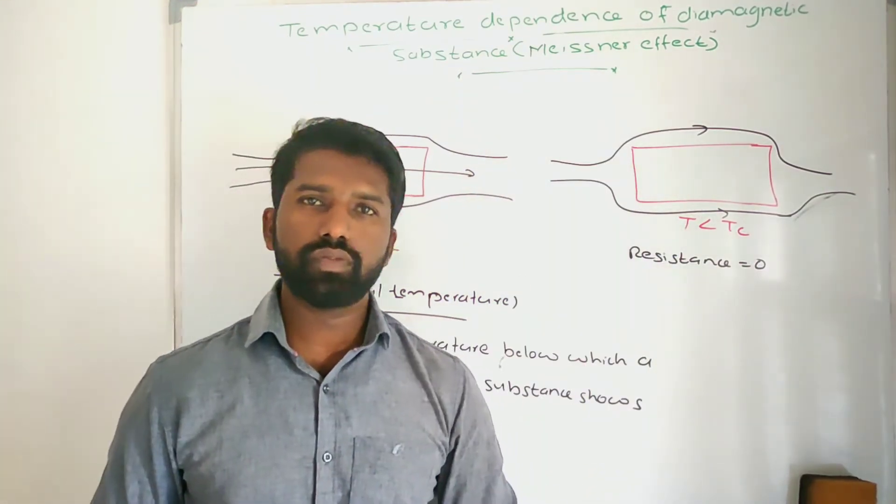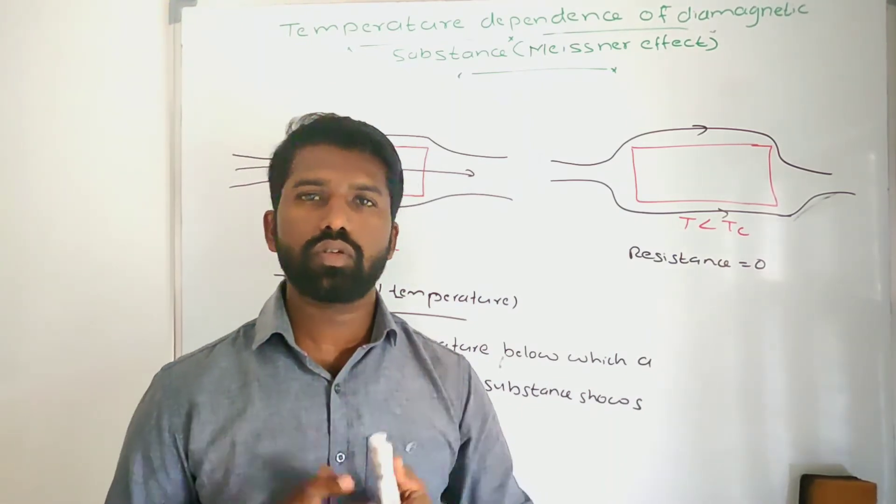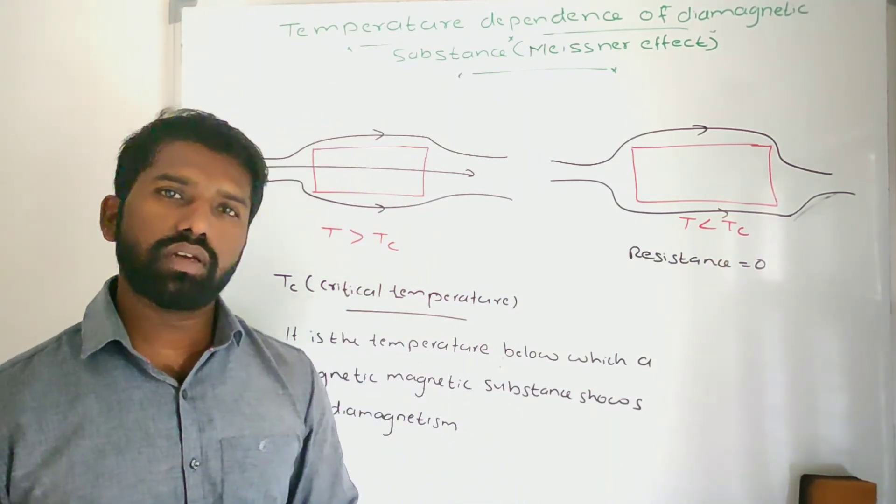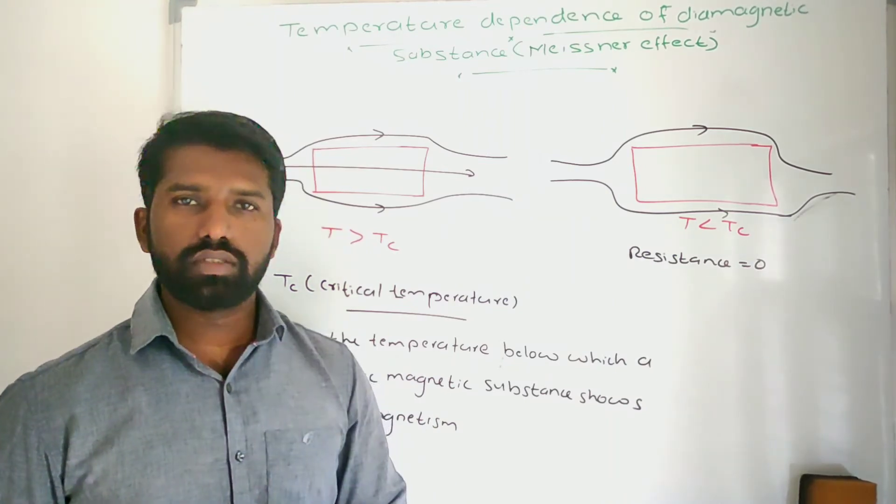The phenomenon of perfect diamagnetism in superconductors is called the Meissner effect, because it was discovered by Meissner.